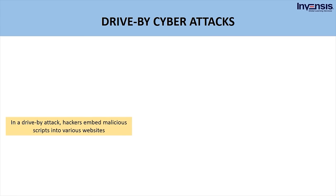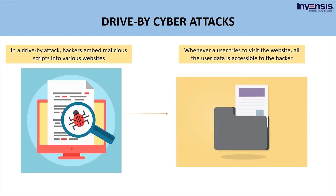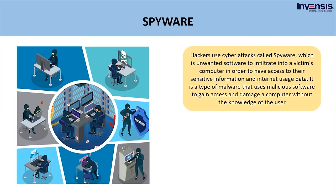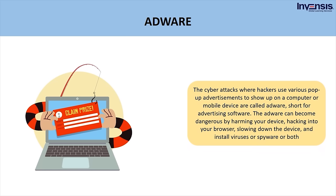In a drive-by attack, hackers embed malicious scripts into various websites. Whenever a user visits the website, all user data is accessible to the hacker, and the system gets corrupted. Hackers also use spyware — unwanted software to infiltrate a victim's computer to access sensitive information and internet usage data. There are four types of spyware: adware, keyboard loggers, Trojans, and mobile spyware. Adware uses pop-up advertisements on a computer or mobile device and can become dangerous by harming your device, hacking into your browser, slowing down the device, and installing viruses or spyware. Eavesdropping attacks involve hackers hacking into cell phones, computers, and laptops by fabricating information in those devices to gain unauthorized access to files.